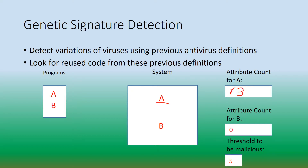The system continues analyzing program A and finds that it is reusing code from another program seen before, and that this code disables security protocols on your system. The system finds this as a negative attribute, and it increments the number of attributes for A again.